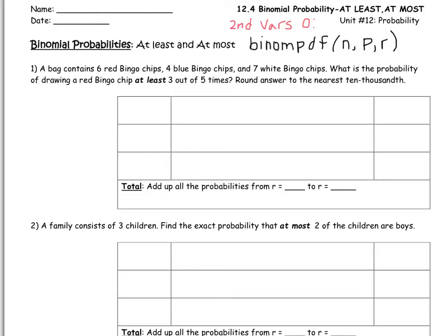So let's use the binomial pdf. We need an n. What is the total? The total number of times that I'm drawing out of the bag is five. What is my p? What is my probability of, well, what are they asking? What is the probability of drawing a red bingo chip? So what's the probability that you get red? Well, here it says that there are six red bingo chips out of a total of how many? If we take six, four, and seven, we get 17. So the probability of getting one red bingo chip is six out of 17.